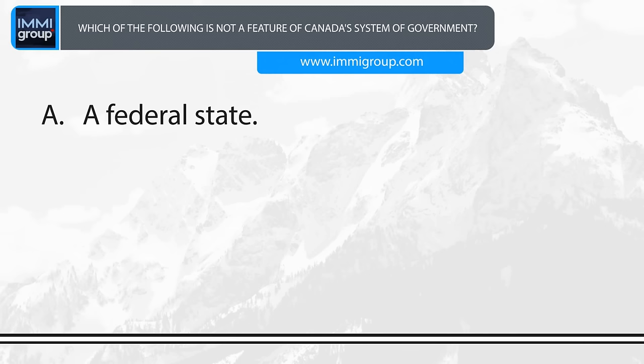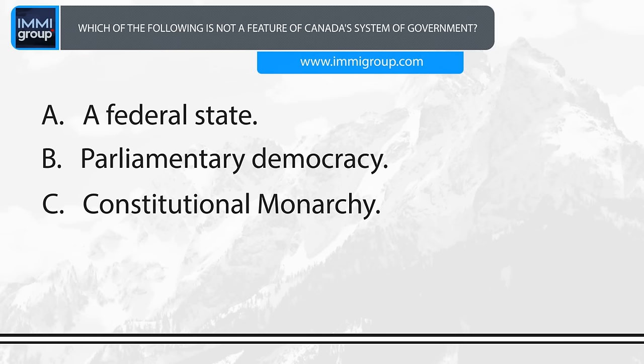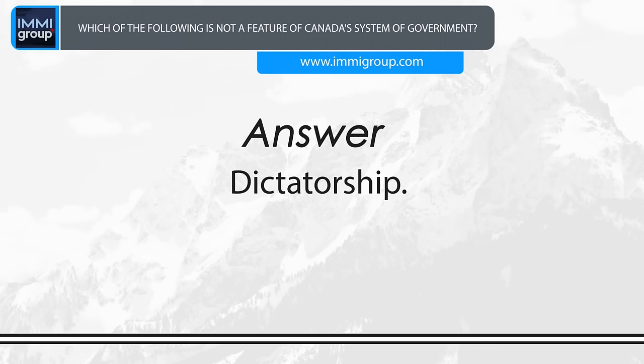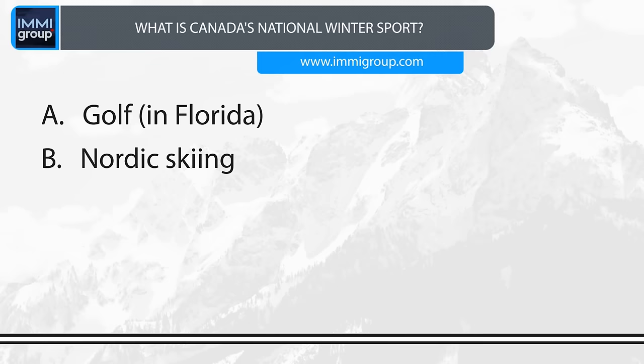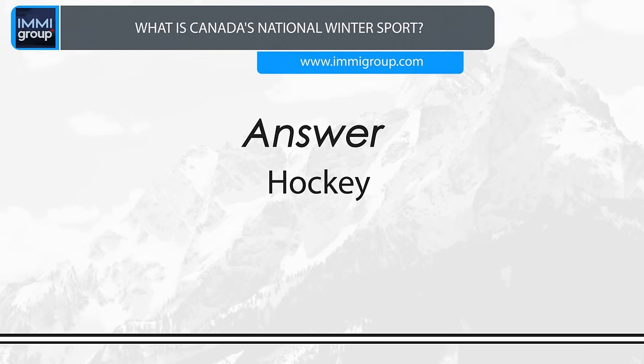Which of the following is not a feature of Canada's system of government? A. A Federal State. B. Parliamentary Democracy. C. Constitutional Monarchy. D. Dictatorship. Answer: Dictatorship. What is Canada's national winter sport? A. Golf in Florida. B. Nordic Skiing. C. Lacrosse. D. Hockey. Answer: Hockey.